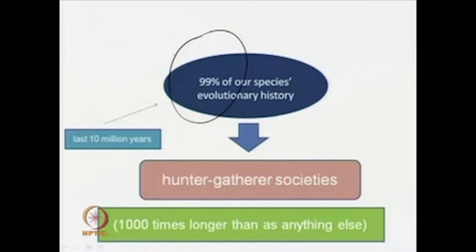If we have spent 99 percent of our species' evolutionary history in hunter-gatherer societies, then obviously this modern life that we have — agriculture, the coming of technology, our sophisticated and very complex social and cultural systems — is what Tooby and Cosmides have called just a blink of an eye. The computer age, for instance, is just a blink of an eye compared to this 99 percent of our species' evolutionary history spent as members of hunter-gatherer societies.